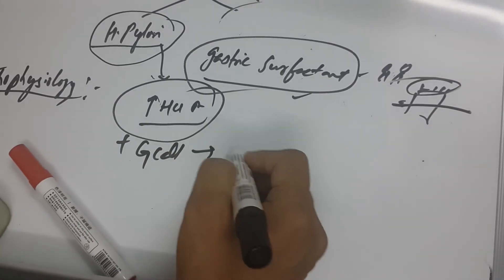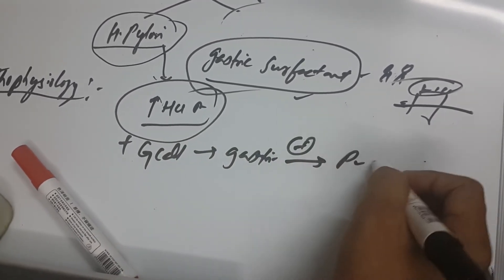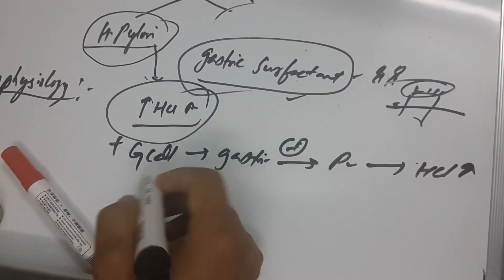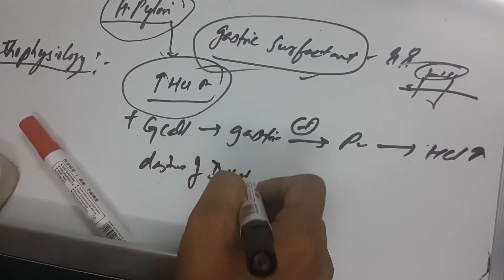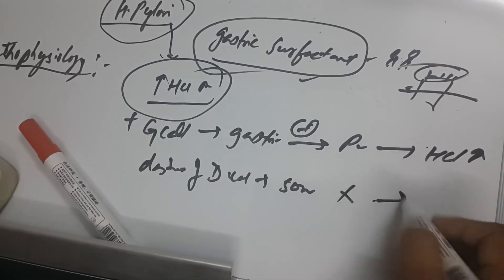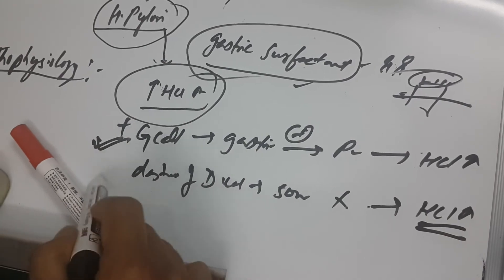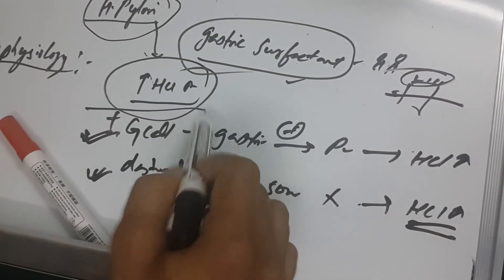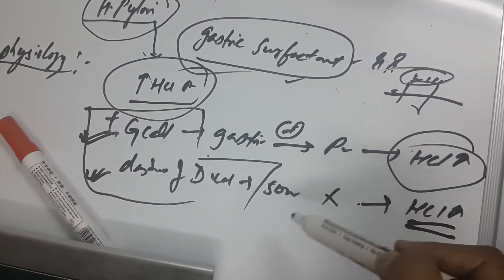H. pylori stimulates G cells — G cells release gastrin, which stimulates parietal cells to increase acid production. At the same time, H. pylori causes destruction of D cells. D cells produce somatostatin; when D cells are destroyed, somatostatin decreases, which means parietal cell activity increases further, so acid production increases.